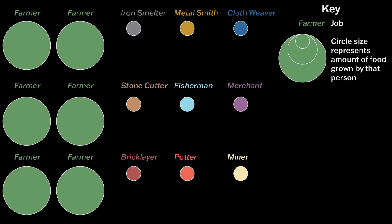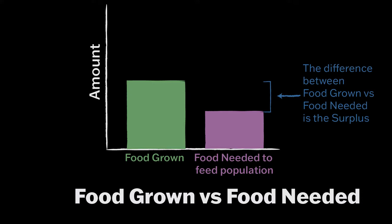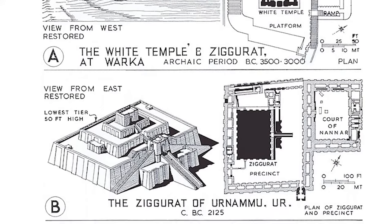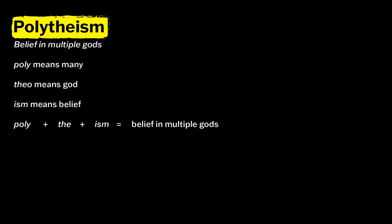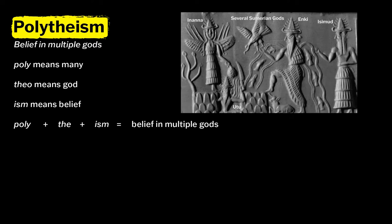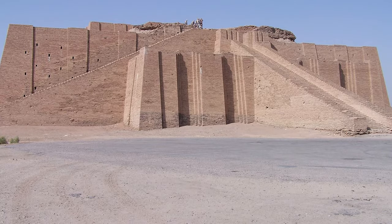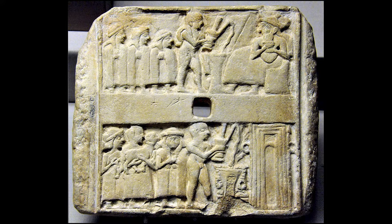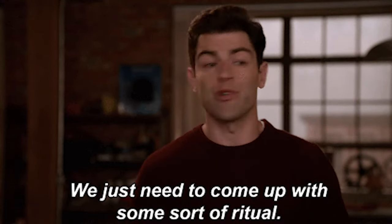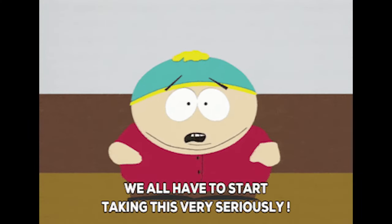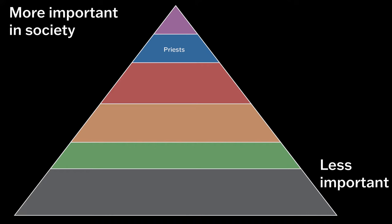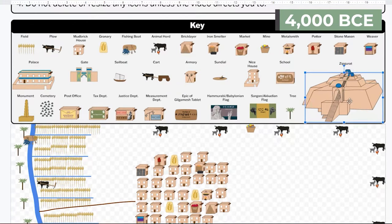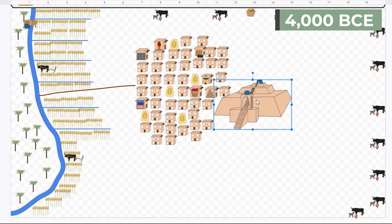The job specialization and surplus meant Sumerians could build large projects like ziggurats or temples. A ziggurat looks like a pyramid made out of sun-baked mud bricks with two to seven step-like layers. Sumerians were polytheists — poly means many and theo means god, so polytheist means belief in multiple gods. They built the ziggurat at the center of the city-state where priests would perform rituals and sacrifices. Sumerians believed they needed to keep the gods happy or else the rains might not come and their crops might fail. Priests were the only ones allowed on the ziggurat, making them very powerful members of society. Add one ziggurat in the middle of your page — because it's the most important building, everything you add now should surround it.